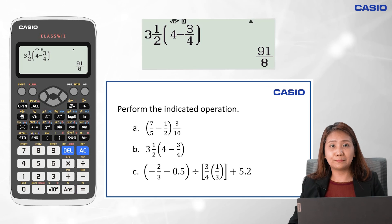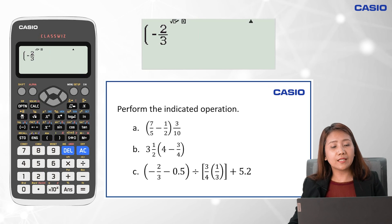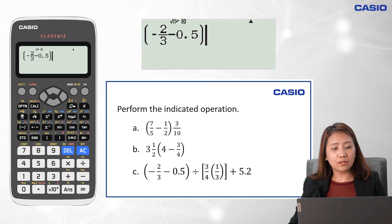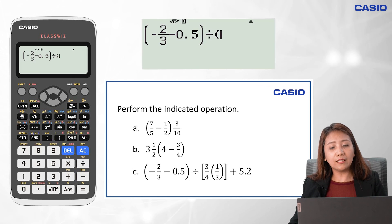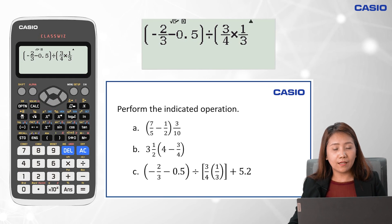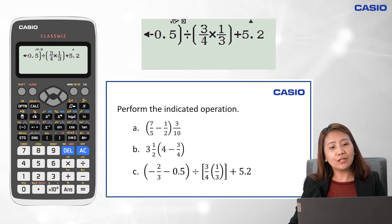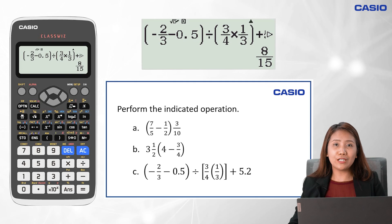For the last item, we key in open parenthesis, followed by negative 2 over 3, arrow right, then minus 0.5, and close the quantity. We divide it with the quantity 3 fourths times 1 third — keying in the fraction 3 over 4 times 1 over 3 — then arrow right and close the quantity. Then we click on plus 5.2. We click on equal sign, and the value of the expression is 8 over 15.